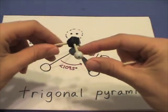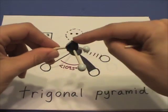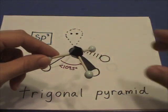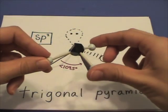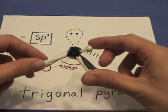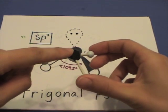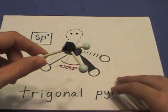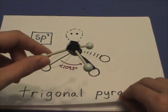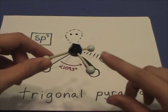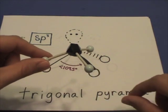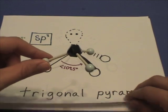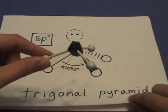With three sigma bonds and one lone pair, the predicted angles are less than 109.5 degrees. This central atom is sp3 hybridized. An example of this shape would be ammonia, NH3 — trigonal pyramid.